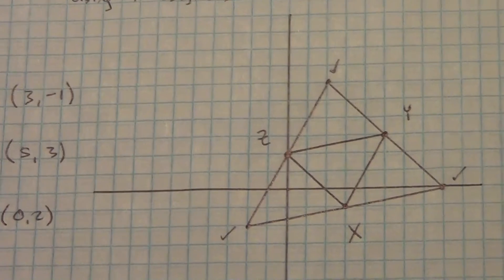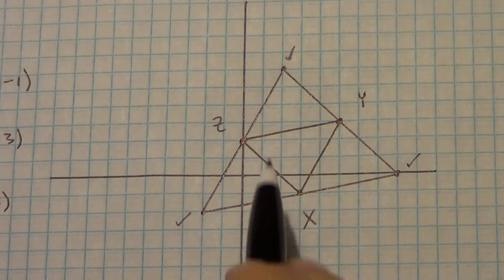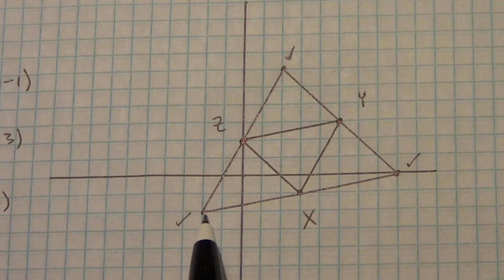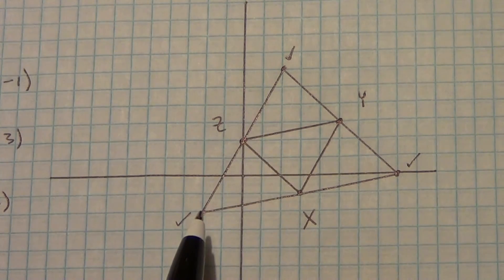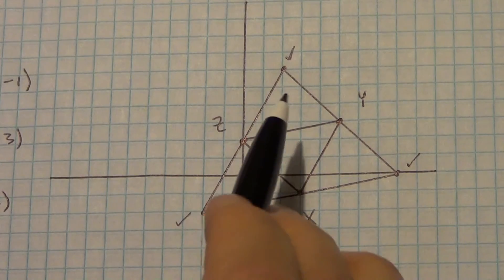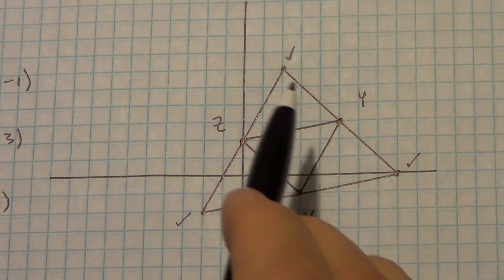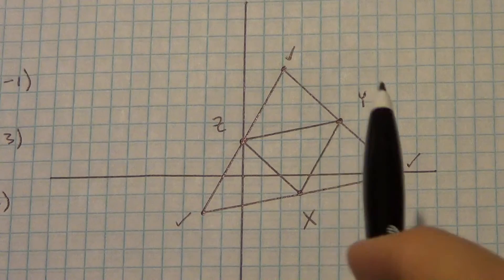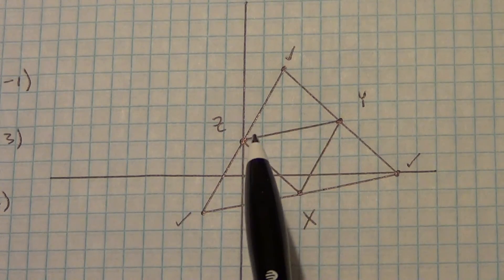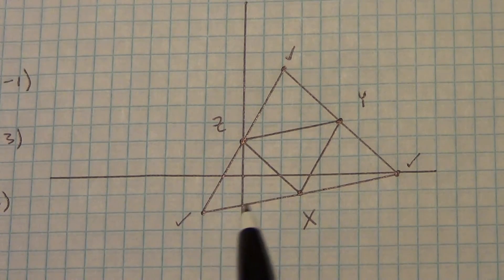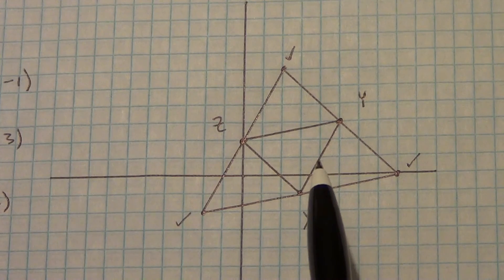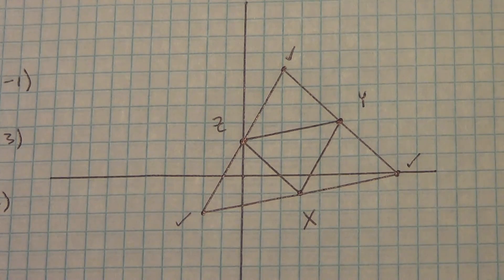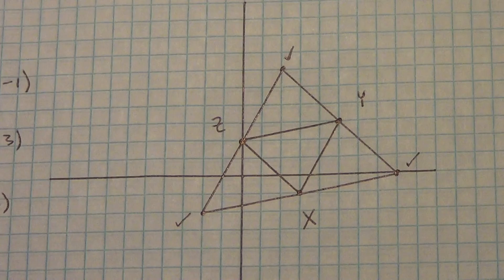Looking at our completed triangle: ZY is parallel to its corresponding outer side, YX is parallel to its corresponding outer side, and ZX is parallel to its corresponding outer side. All three outer sides are twice as long as their corresponding inner midsegments. All four smaller triangles formed inside are congruent to each other and similar to the original outer triangle. That's how we find the large triangle when we start with the midsegments.